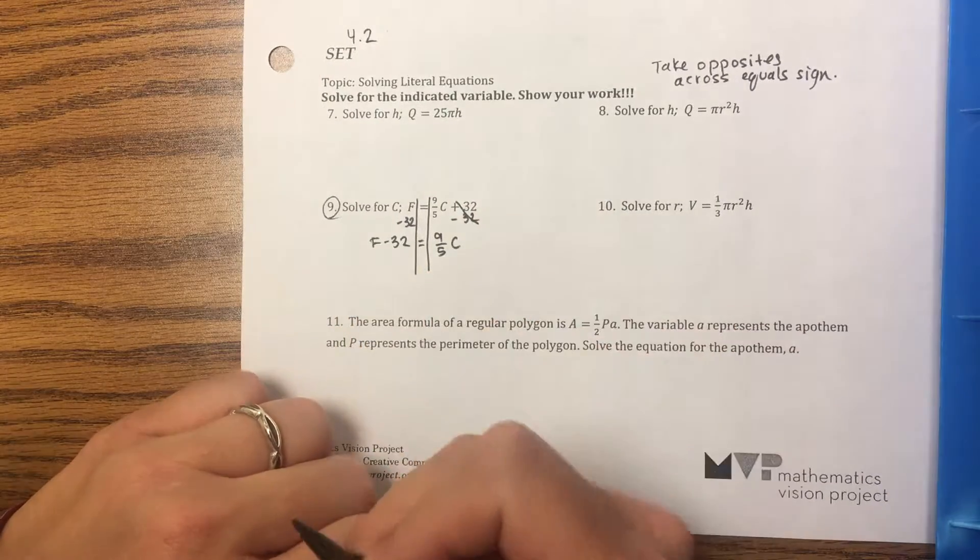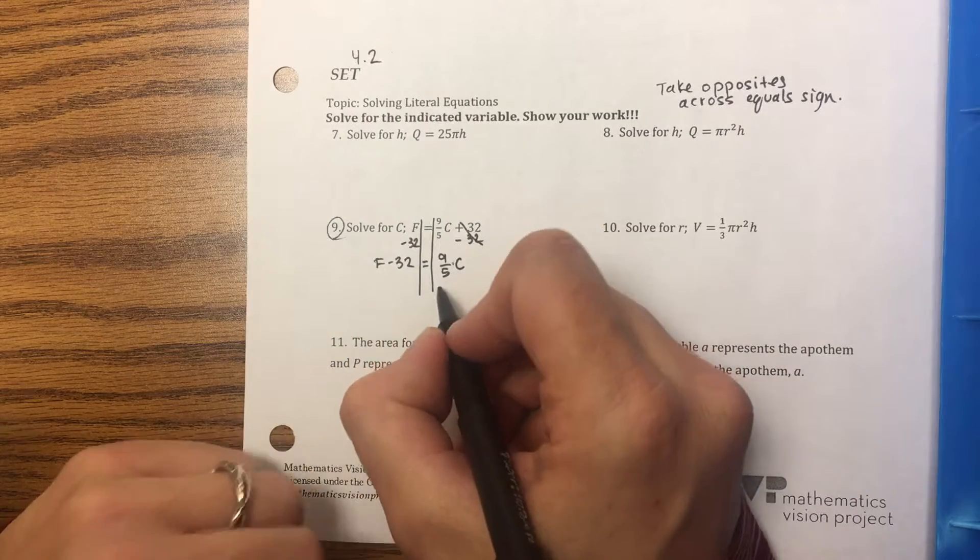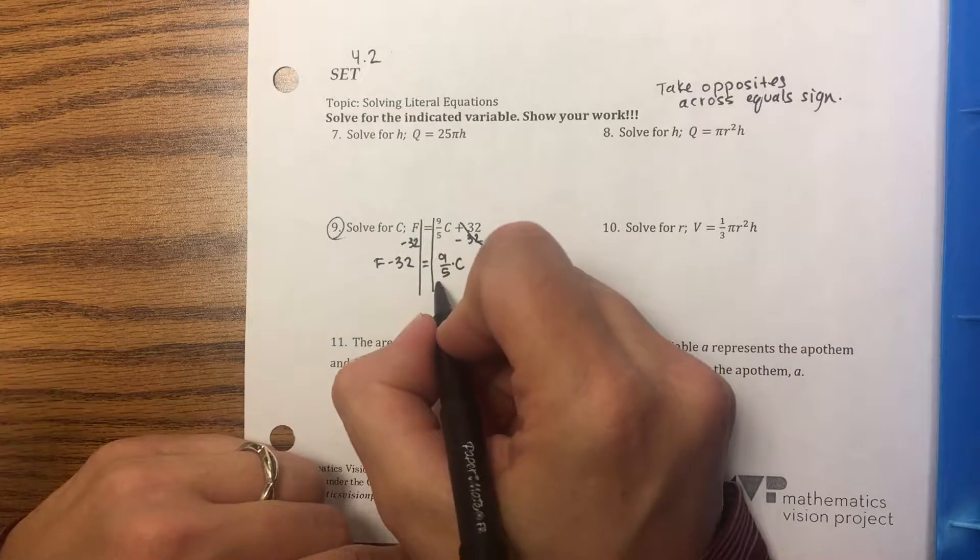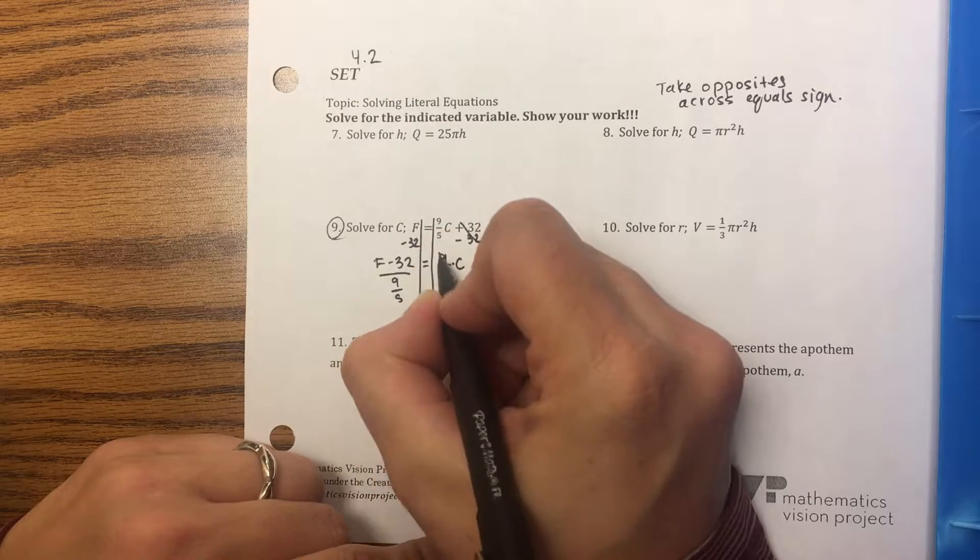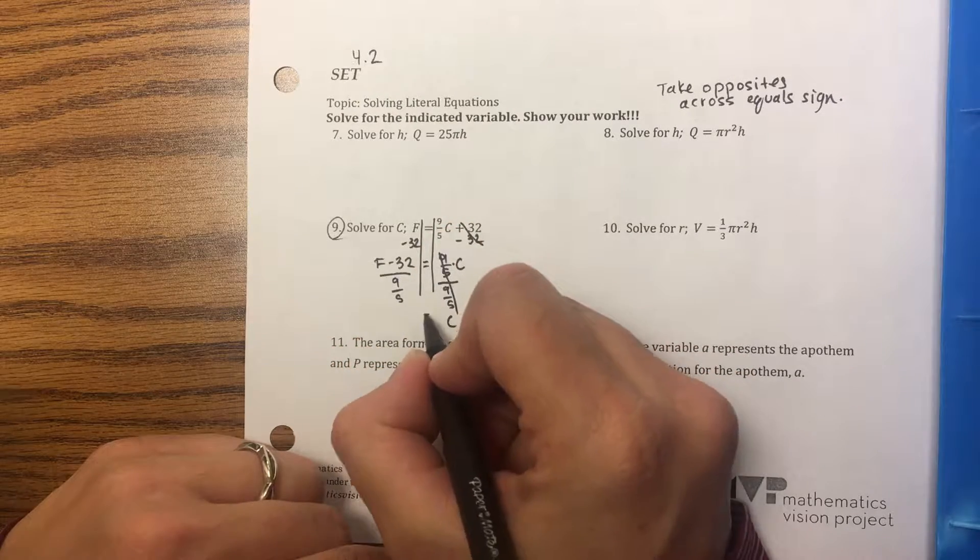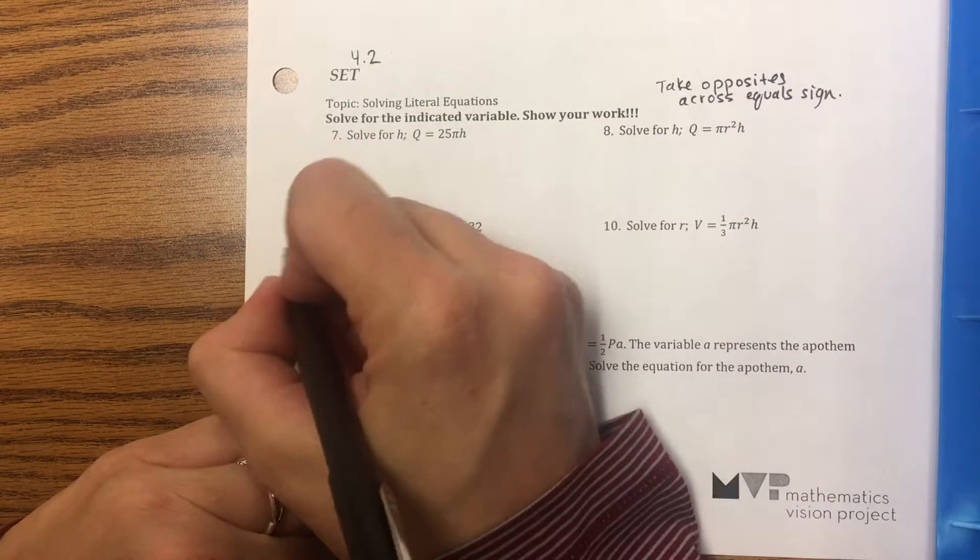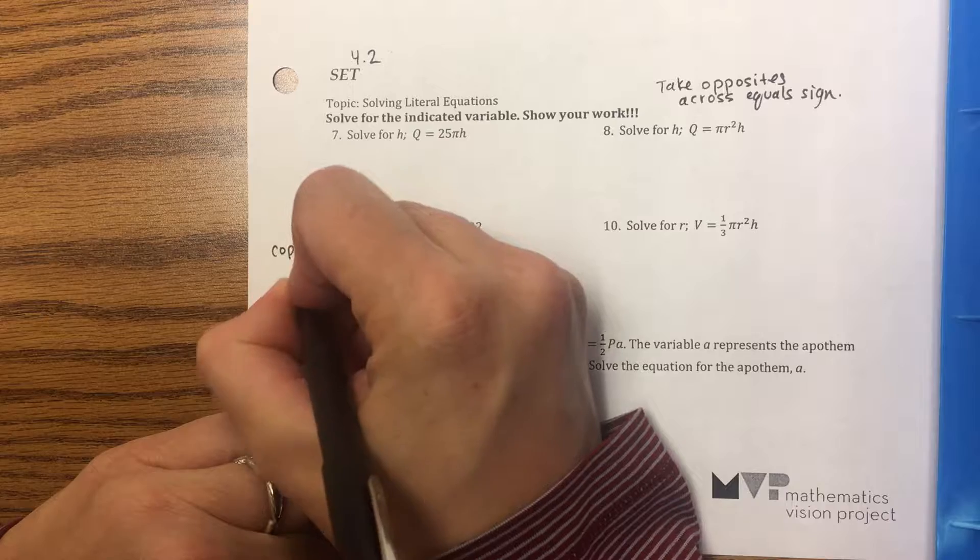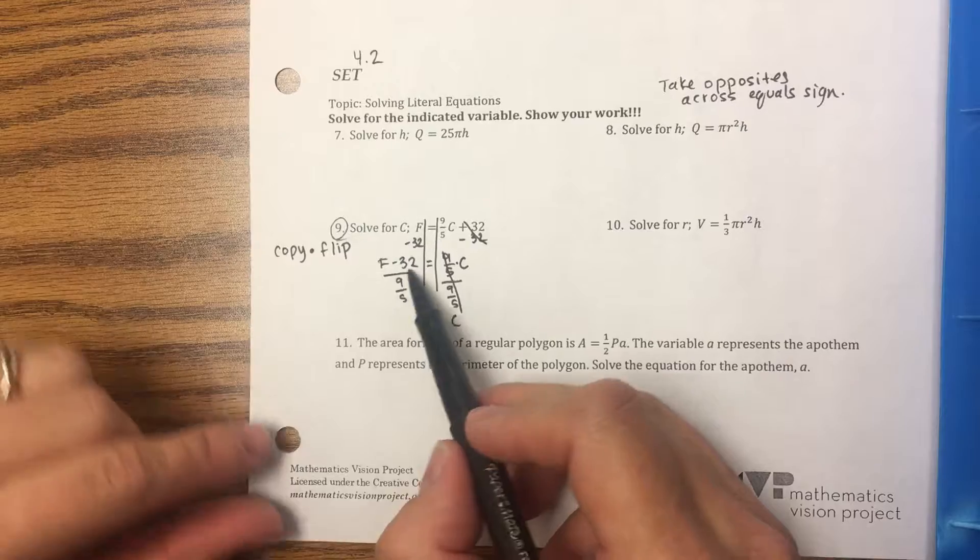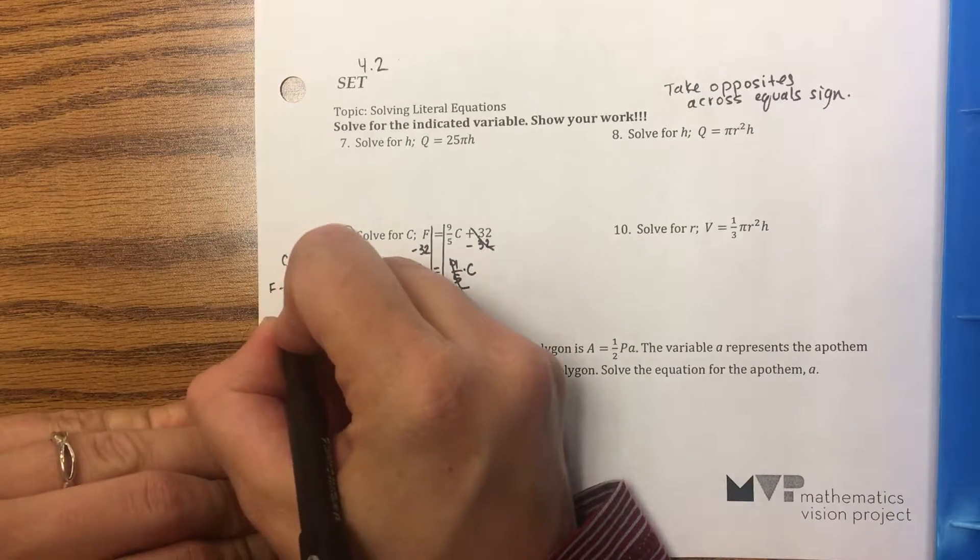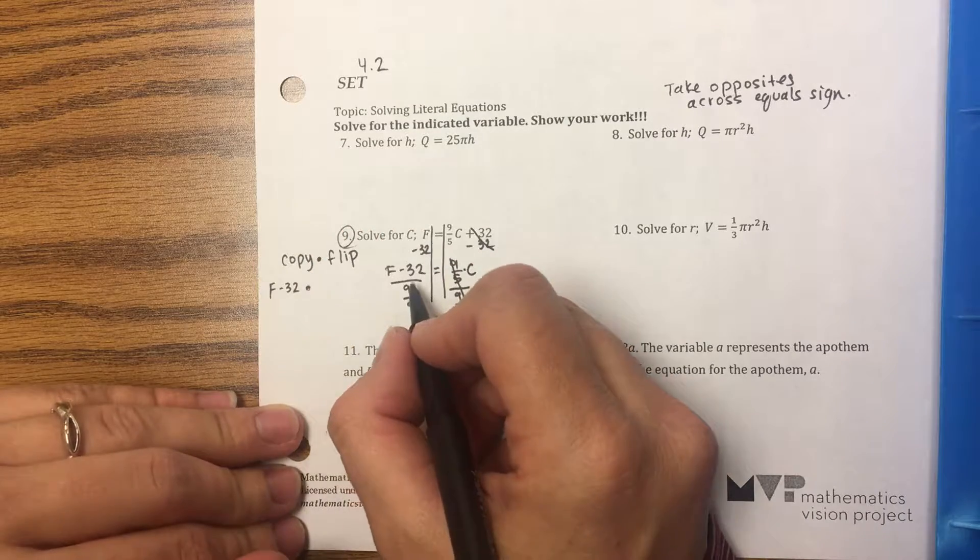So I have F minus 32, I can't combine those, equals 9 over 5 C. So that's 9 fifths times C. The opposite of times is divide, so I'm going to divide both sides by 9 over 5. And now I have C by itself, but you can't have a fraction in a fraction. So remember when you have fractions that are dividing, copy dot flip.